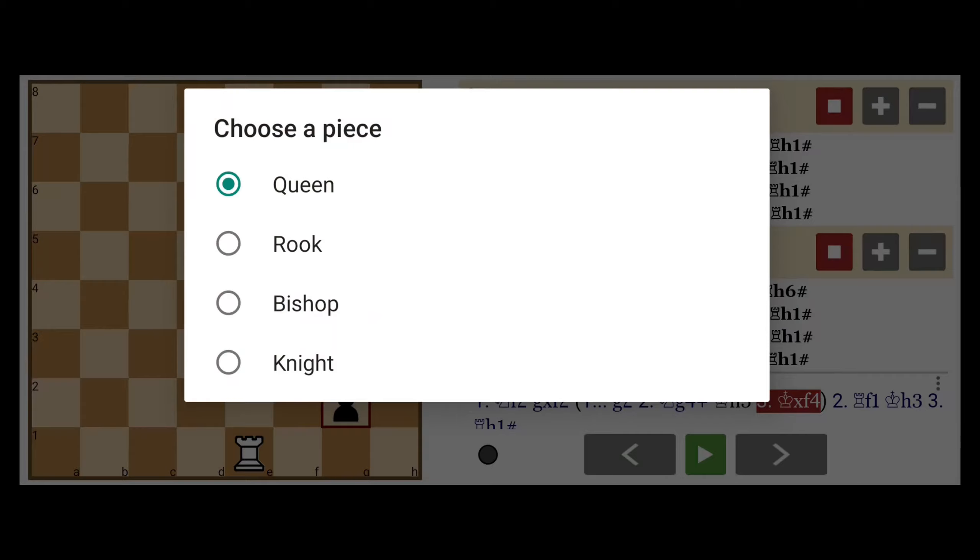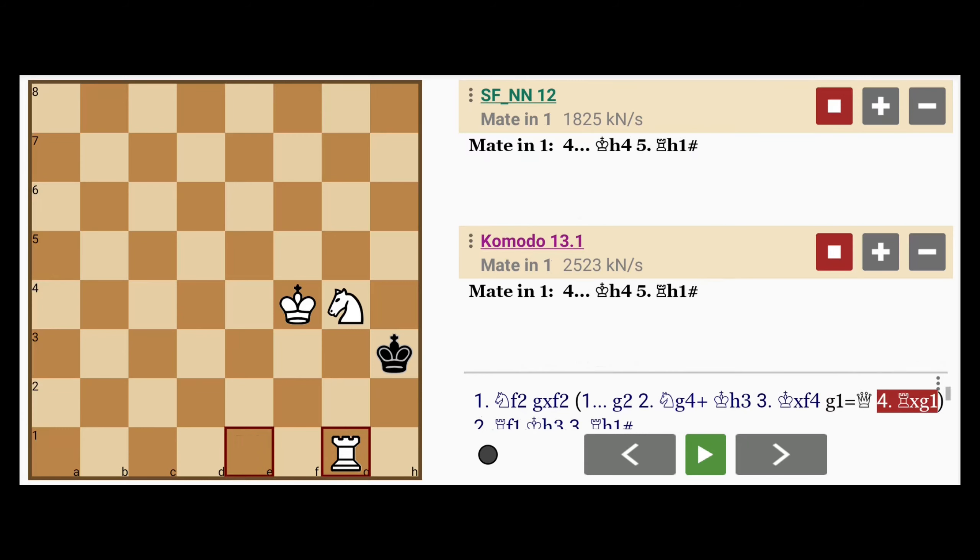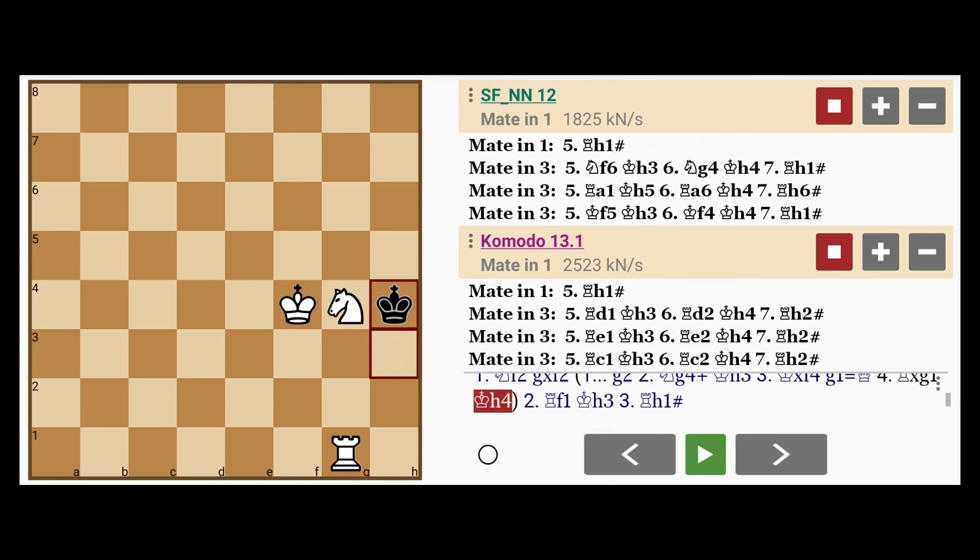Black can promote to anything. The rook just captures it. The king can't move to h2 because it's guarded by that knight. There's only one move to h4, which allows rook to h1 mate.